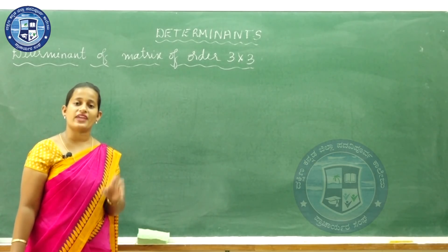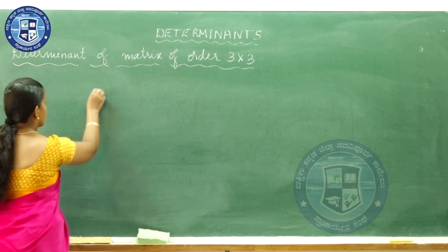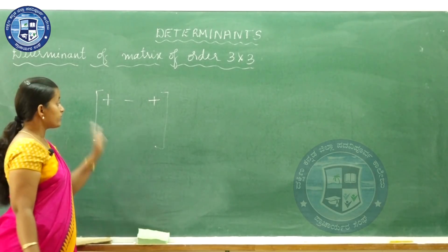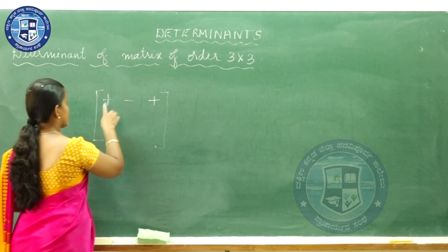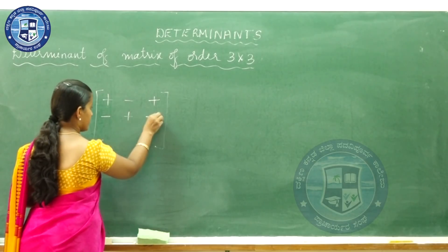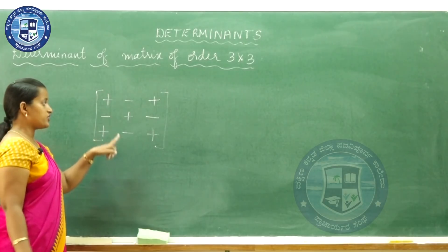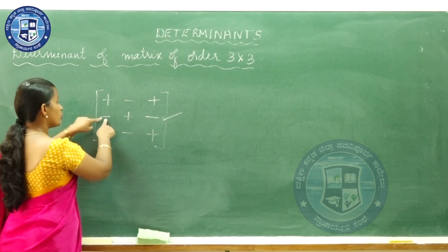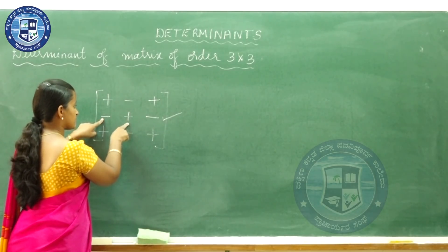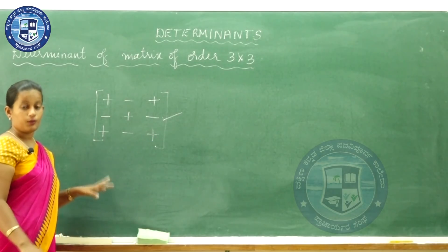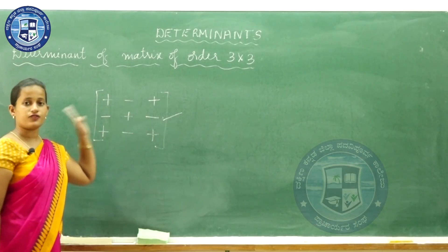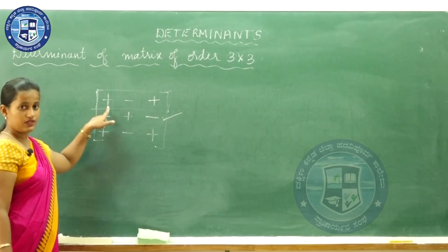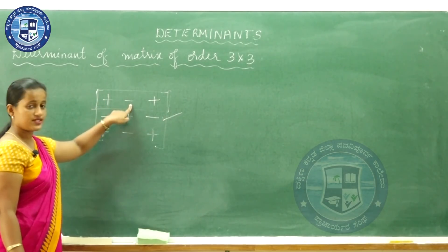In these three problems, we expanded the determinant about the first row, using sign convention plus, minus, plus. We can actually expand the determinant about any row or any column using the full sign convention: +, -, +, -, +, -, +, -, +. But we will stick to expanding about the first row only to avoid confusion, strictly following plus, minus, plus — that is, as it is, change the sign, as it is.